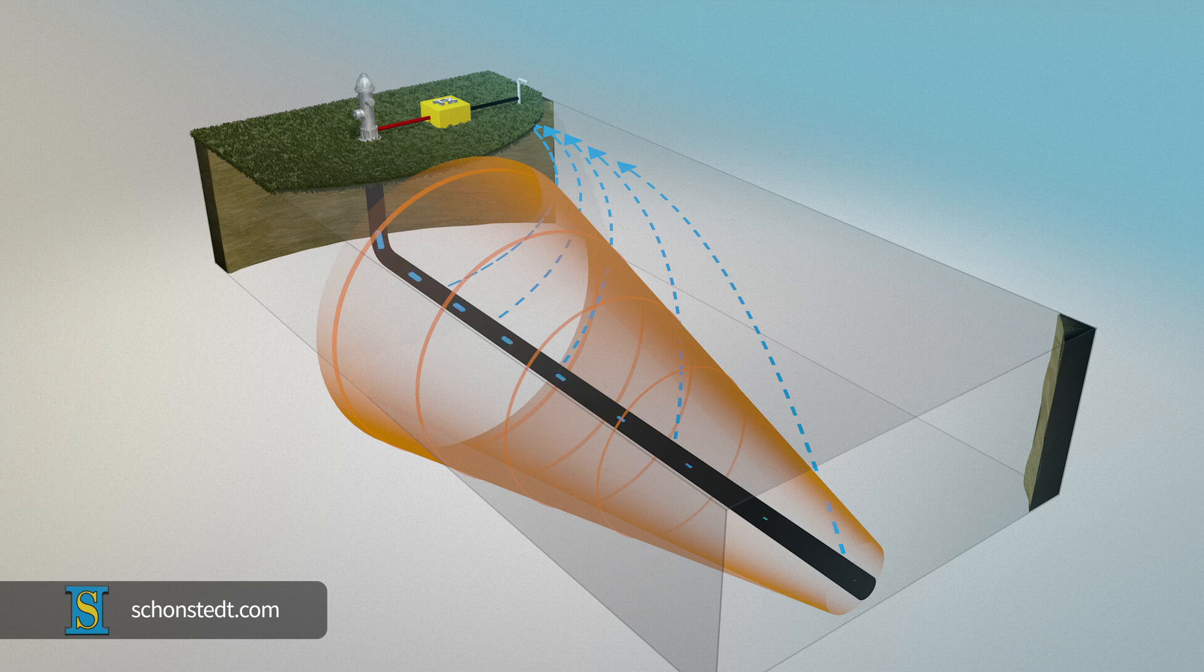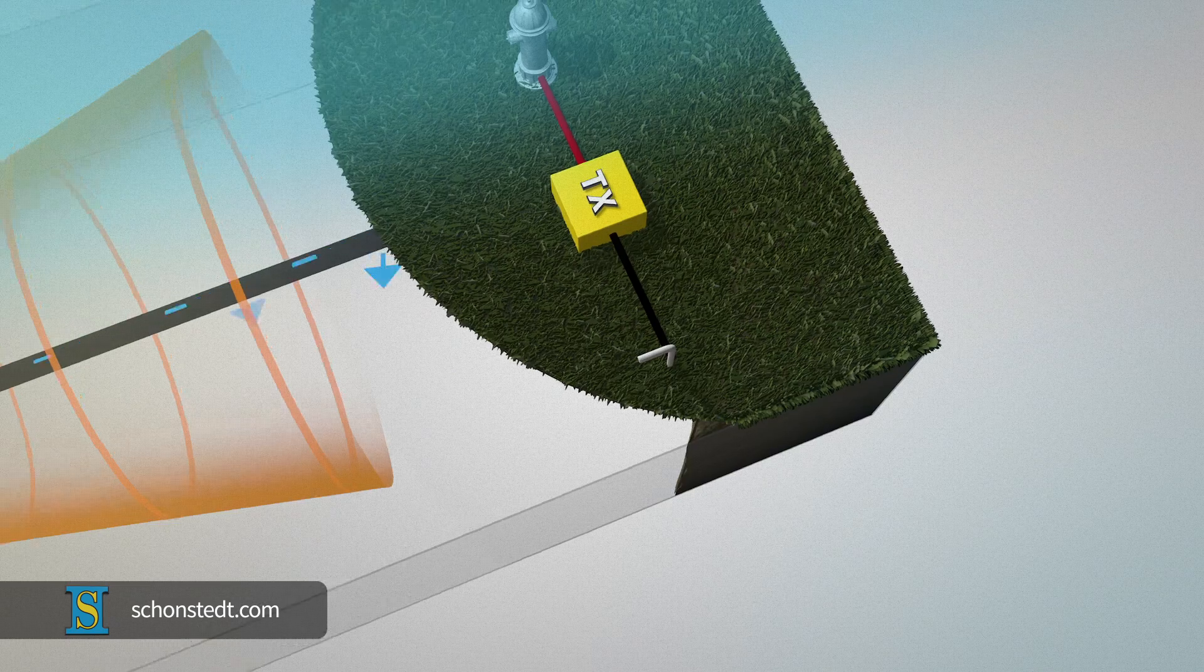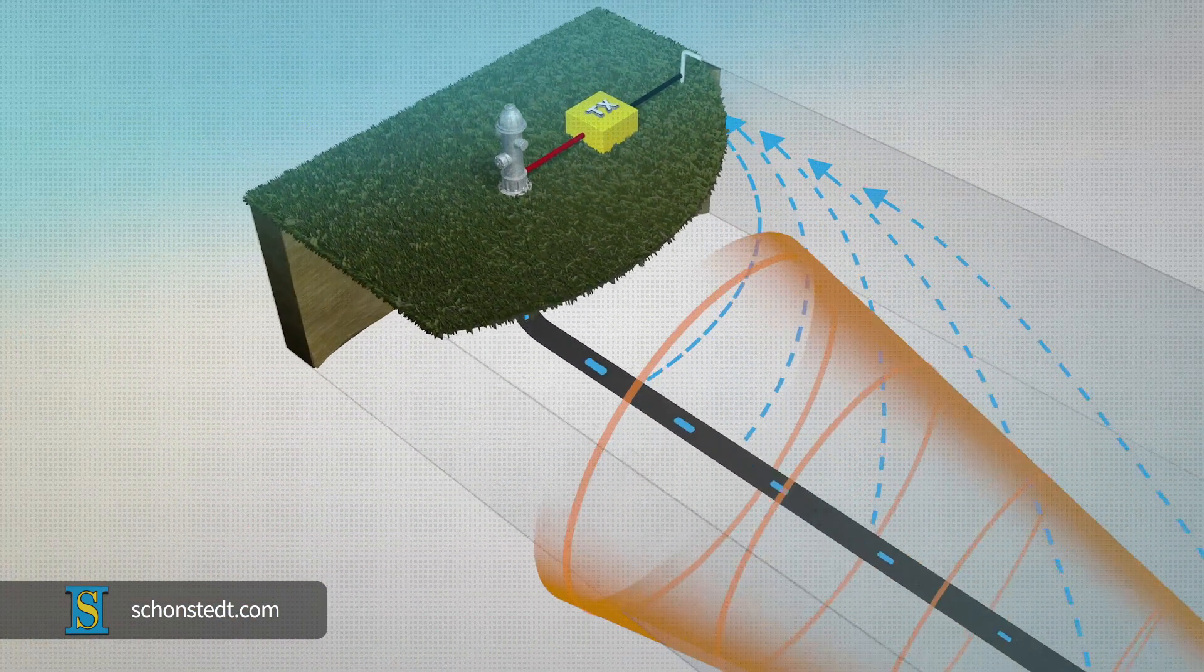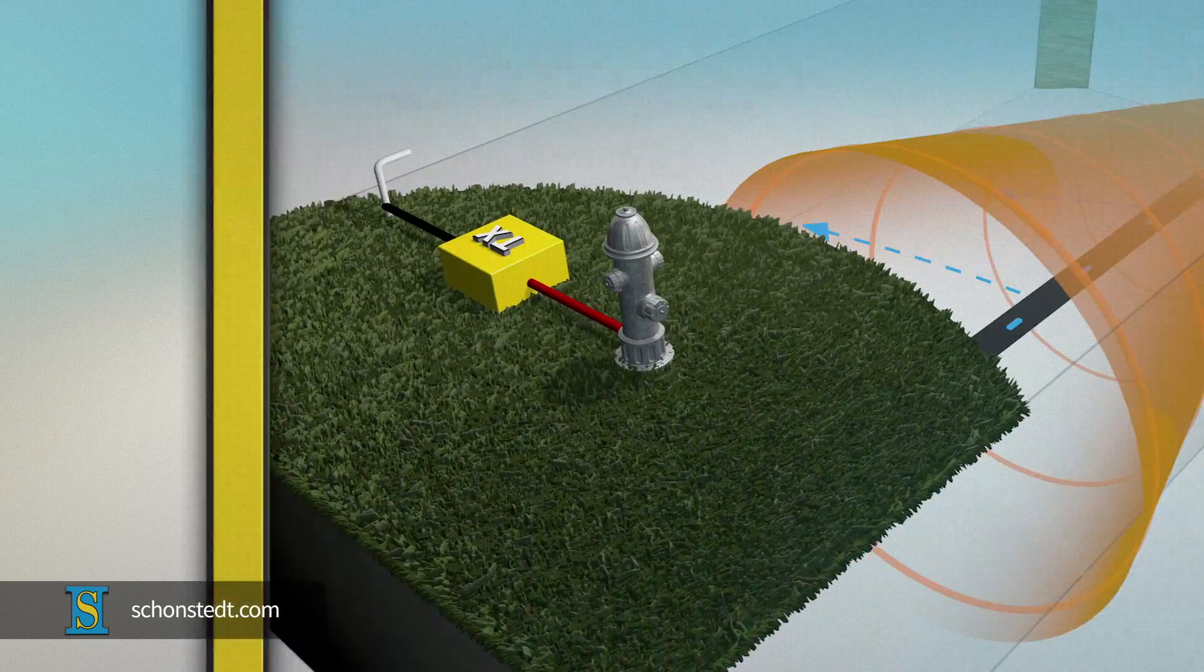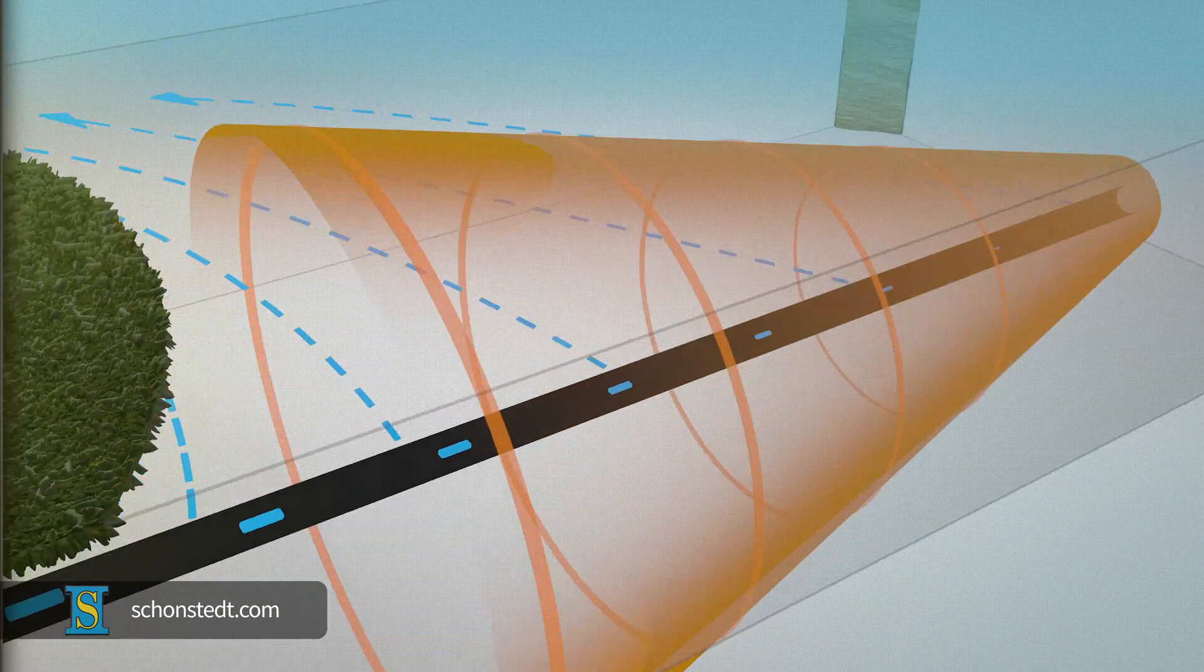In general, the better the ground, the better the signal. A current will now travel along the pipe or cable. As the signal travels, it gradually leaks into the ground and diminishes the farther it gets from the transmitter.